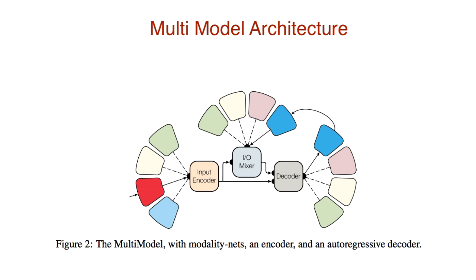Now let's talk about multi-model architecture. The multitasking model consists of four main components. First is modality networks, which convert the input to a universal input representation. Then we have an encoder which processes the input, an IOMixer which encodes the input with previous outputs, and an autoregressive decoder which processes the input and mixture to generate output.